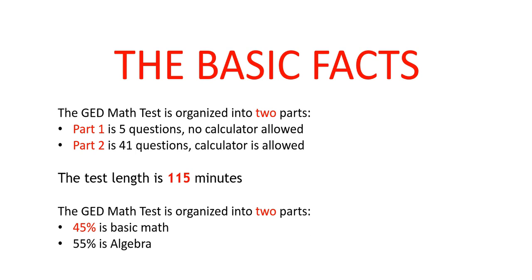The GED math test is also organized in two parts subject-matter-wise. Part one is basic math — things like fractions, percents, and basic shape measurement. Part two is 55% algebra: linear equations, quadratic equations, evaluating and solving polynomials, and inequalities.